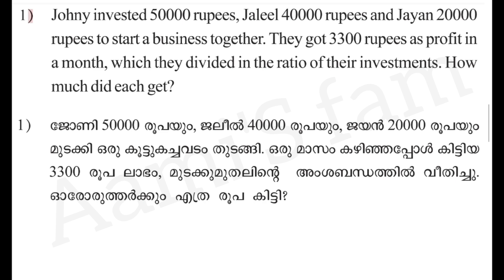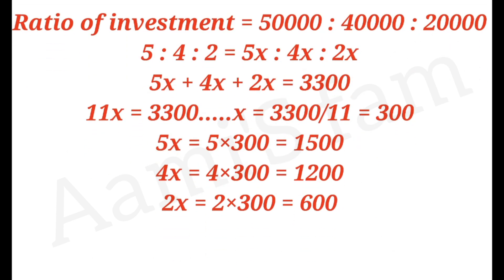Johnny, Jalil, Jayan — the ratio of investment is 50,000 to 40,000 to 20,000. Now, let's divide everything by 10,000. How do we get to 5, 4, 2? That's our first step: 5 is to 4 is to 2.